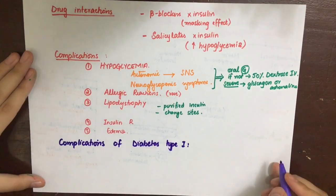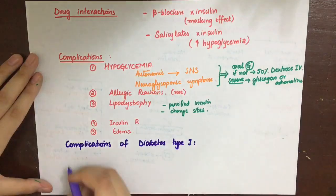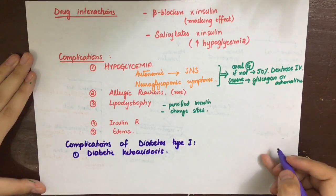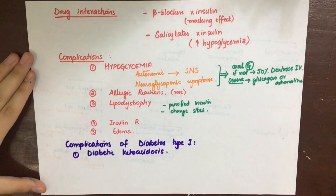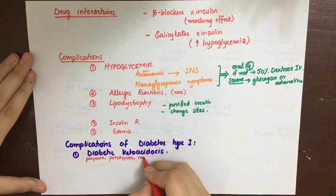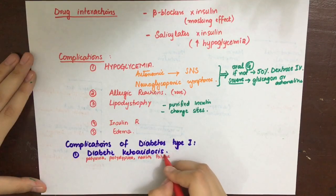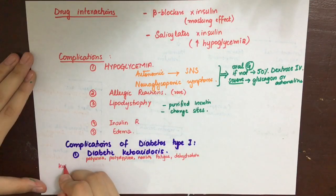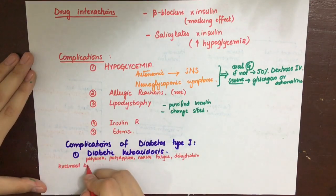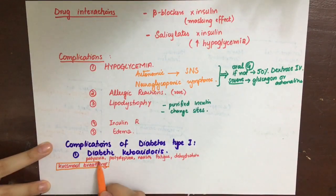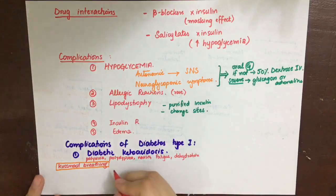Two important complications of type 1 diabetes are diabetic ketoacidosis and hyperosmolar non-ketotic coma. Diabetic ketoacidosis is a medical emergency characterized by polyuria, polydipsia, nausea, fatigue, dehydration, and Kussmaul breathing — a very rapid, deep breathing without dyspnea where the lungs are trying to compensate for acidosis. Another symptom is fruity breath due to acetone formation. This occurs because without insulin, cells cannot utilize glucose, so the liver produces ketone bodies: acetone, acetoacetate, and beta-hydroxybutyrate. Acetone is volatile and responsible for the fruity breath.